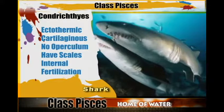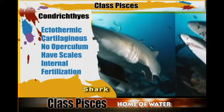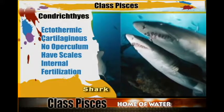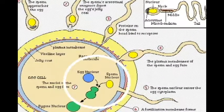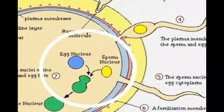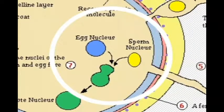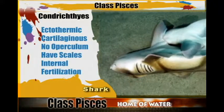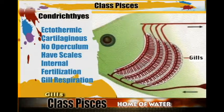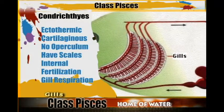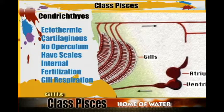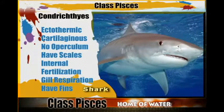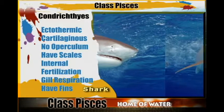Their fertilization is internal, whereby the female gametes and the male gametes will fuse to form a zygote within the female body, and they produce live young ones. For breathing, they breathe through the gills and they also have fins that are used in locomotion.